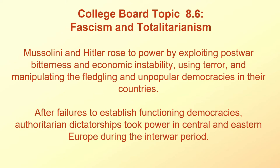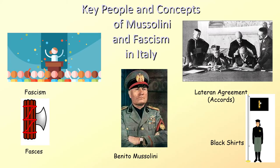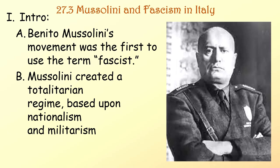After failures to establish functioning democracies, authoritarian dictatorships took power in Central and Eastern Europe during the interwar period. The place: Italy, 1914–1938. Key people and concepts include fascism, fasces, Benito Mussolini, the Blackshirts, and the Lateran Agreement or Lateran Accords. Benito Mussolini's movement was the first to use the term fascist. Mussolini created a totalitarian regime based upon nationalism and militarism.